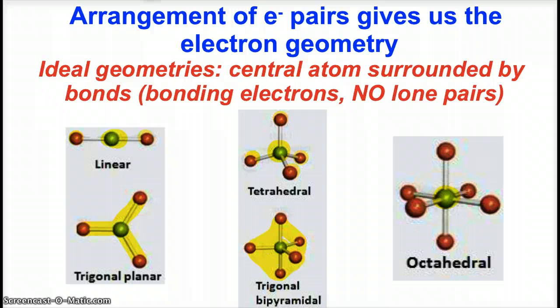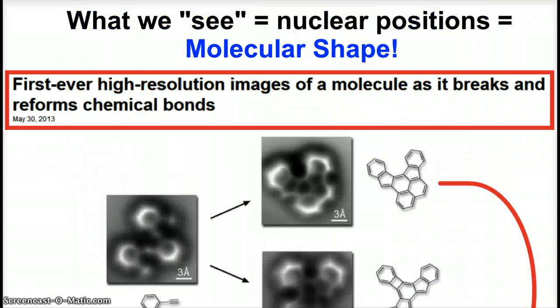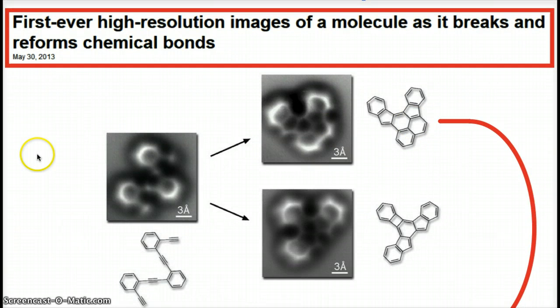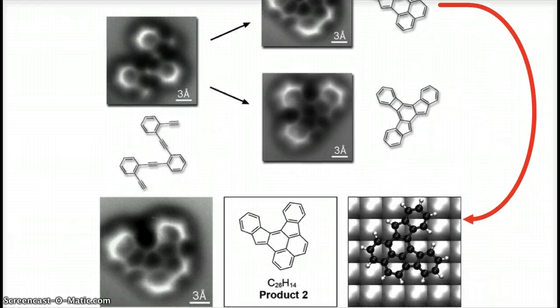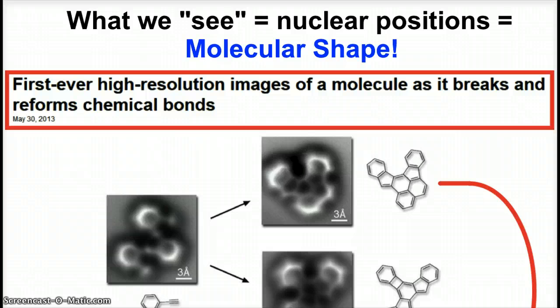When we take a look at these molecules, we get the molecular shape because when we image molecules we see the nuclear positions. Here's a fascinating picture taken on May 30th, 2013—the first ever high-resolution images of a molecule as it breaks and reforms chemical bonds. These actual images very much resemble the flat structures, the two-dimensional structures we draw, and the model kits we use.